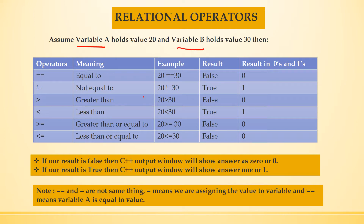There are six relational operators in C++: equal to, not equal to, greater than, less than, greater than or equal to, and less than or equal to.